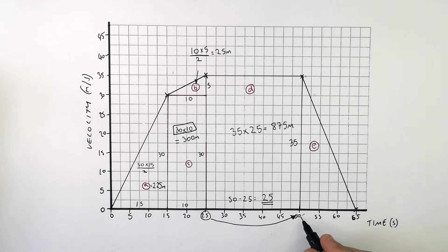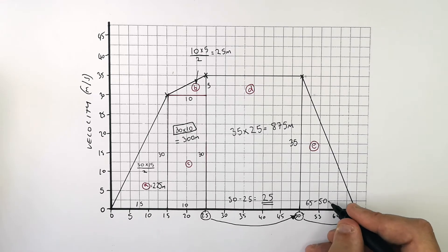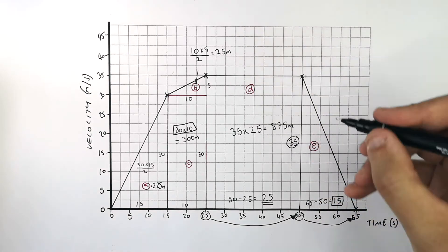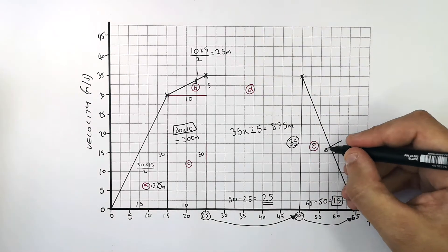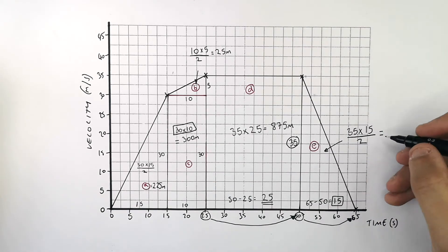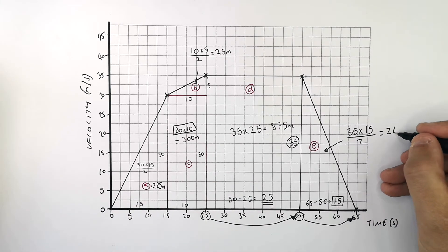During period E of the journey the object decelerates. The base is 65 minus 50 which gives the base a total of 15. So you use the equation base times height divided by 2 so it'll be 35 times 15 divided by 2 which gives you a distance during the deceleration of 262.5 metres.